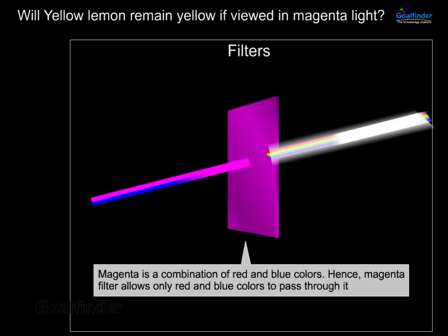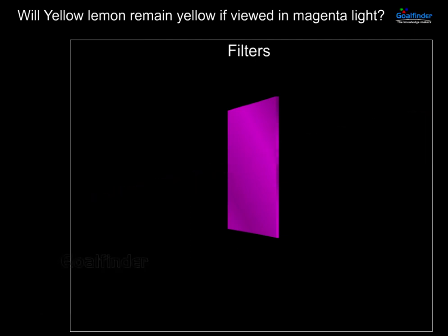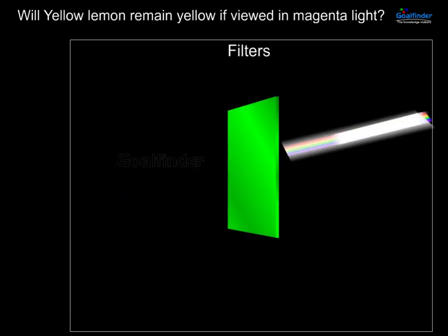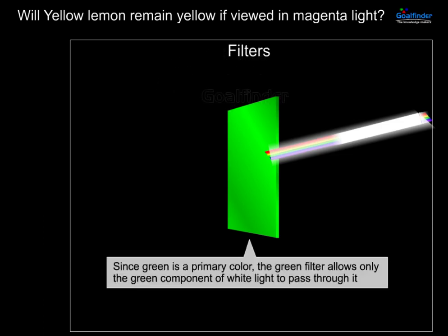Magenta is a combination of red and blue colors. Hence, a magenta filter allows only red and blue colors to pass through it. Since green is a primary color, the green filter allows only the green component of white light to pass through it.